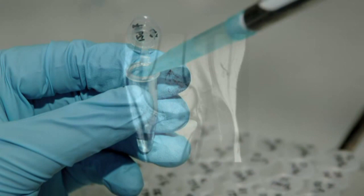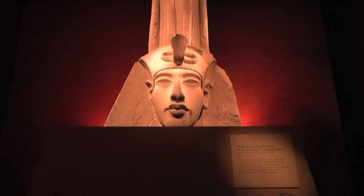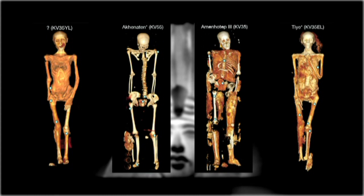Combining advanced research methods found in genetics, anthropology, and radiology, scientists studied King Tut's remains along with those of ten other mummies from his royal family, including his mother, father, and paternal grandparents.